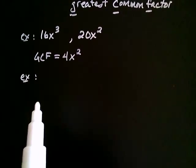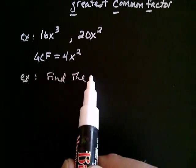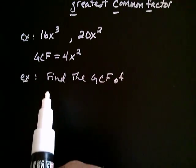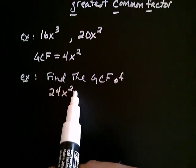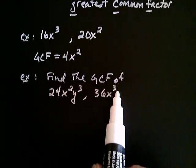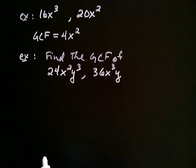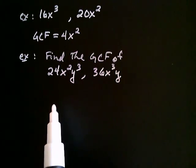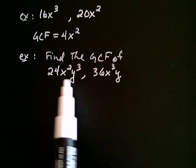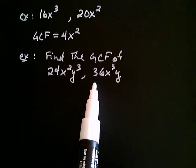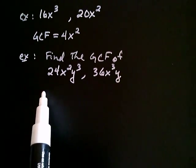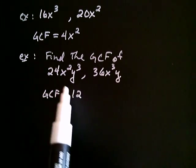Let's find the GCF of something a bit more complicated: 24x squared y cubed and 36x cubed y. A nice way of thinking about this is to imagine these two expressions conversing with each other, starting with the numerical parts — their coefficients. The largest number that goes into both 24 and 36: two goes into both, and so does four, and so does six, but there's a larger number — that larger number would be 12. So the GCF is going to for sure have a 12 in it, because 12 goes into both of those numbers.